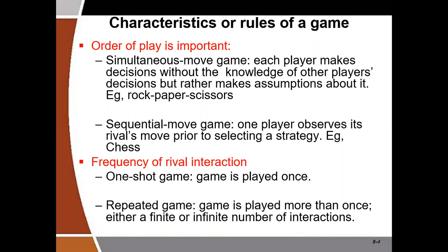In a sequential move game, one player observes the move by his rival and selects a strategy based on the rival's strategy. An example in terms of normal games is chess — one player makes a move, the other player studies the move and also makes his move. So in terms of order of play, we have simultaneous move games and sequential move games.